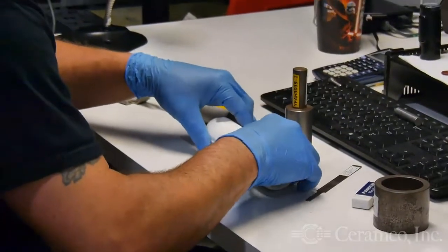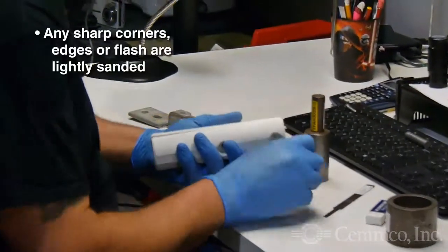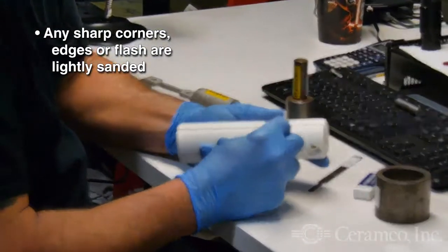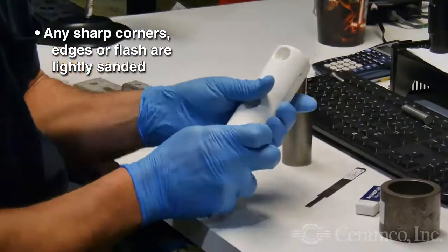Next is the surface inspection. The mated halves are thoroughly examined for any areas that need a light sanding to remove sharp corners, edges, or flash.